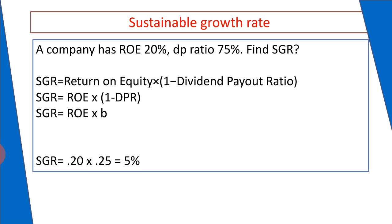Another example: a company has a return on equity of 15% and a dividend payout ratio of 50%. Find the sustainable growth rate. Here, return on equity is 0.15 and (1 − DP ratio) is also 50%, so 0.15 × 0.50 = 0.075, that is 7.5%. It is very simple to calculate the sustainable growth rate.